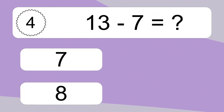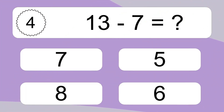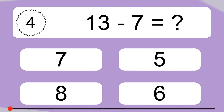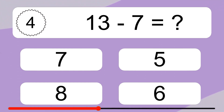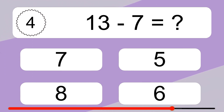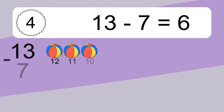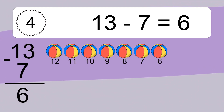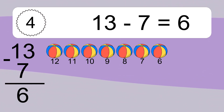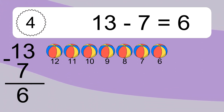13 minus 7 equals what? 13 minus 7 equals 6. Let's count it: 12, 11, 10, 9, 8, 7, 6.